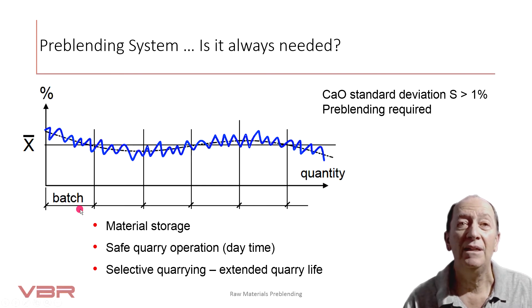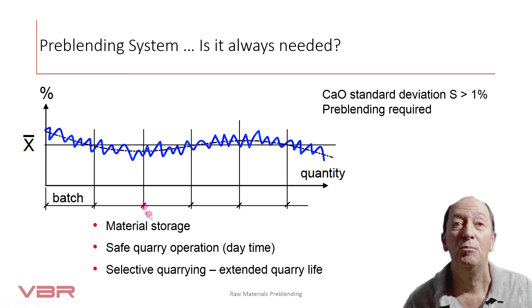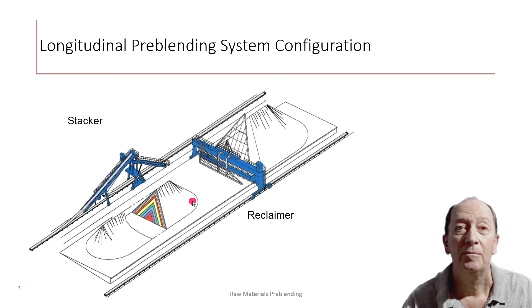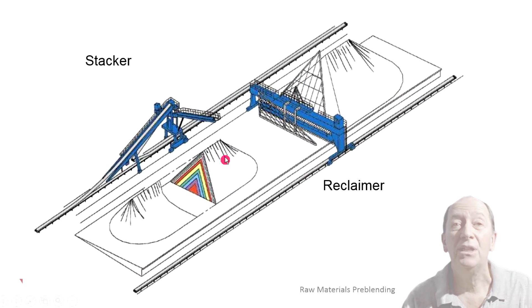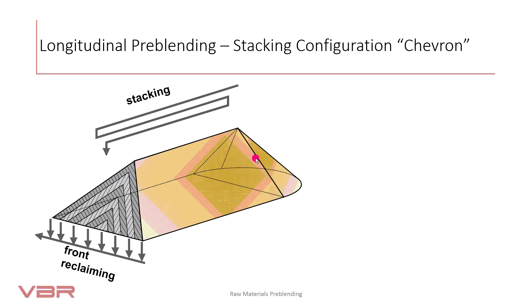The longitudinal pre-blending system is known as batch blending, since one pile has to be formed while the other is reclaimed, and then we change. The raw material from the quarry is stacked in layers to a pile and reclaimed at right angles to the layers in thin slices on the other pile. There are varied combinations of pile structure and extraction processes — let's have a closer look at some of these.